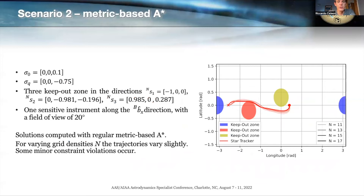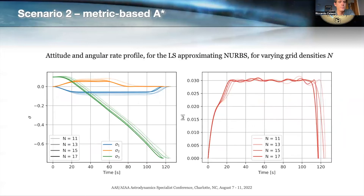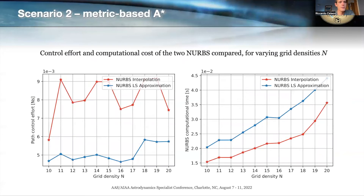Scenario two is the same as before but with three keep-out zones. Varying the grid density yields pretty different solutions because the attitude waypoints are sampled differently. The attitude profiles and angular rate profiles associated with different grid densities all match the type of profile we described before, so for all grid densities we get good solutions. Regarding control effort and computational time, we see almost exactly the same trend: the least-square approximating NURBS always outperforms the interpolating NURBS in control effort, while being more computationally costly.